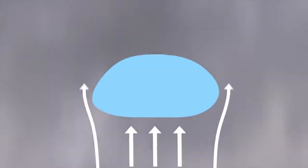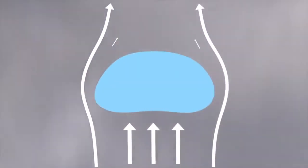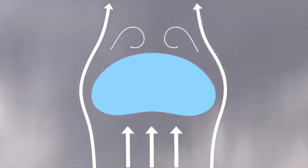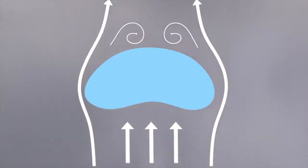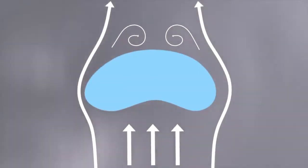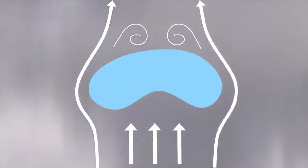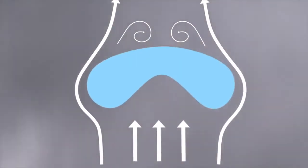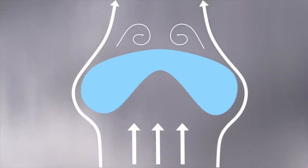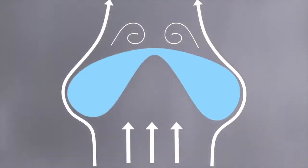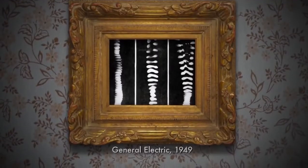These larger raindrops fall through the air faster. The wind resistance on the underside of the drop causes the bottom of the drop to flatten, resulting in the drop looking like a hamburger bun. As the drop continues to fall and grow, at some point it becomes too large for the surface tension to hold it together, so the raindrop breaks apart into smaller, spherical drops.